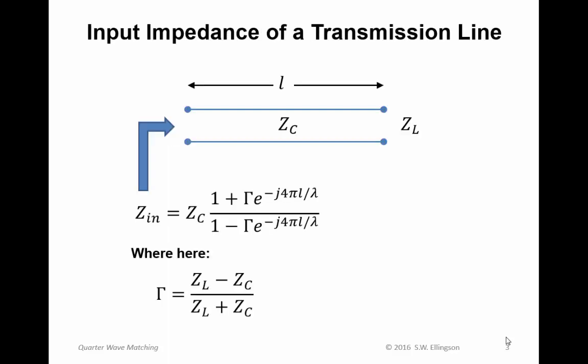So just to remind you, here's our nomenclature and some theoretical relationships for transmission lines in general. When we have a length L transmission line and the characteristic impedance of that transmission line is Z sub C, and it's terminated into a load Z sub L,